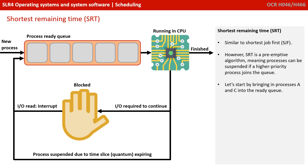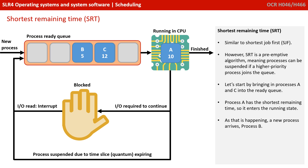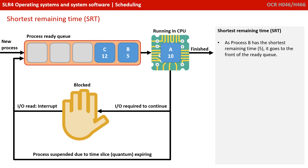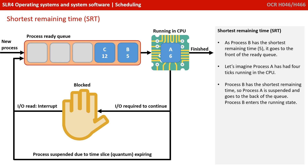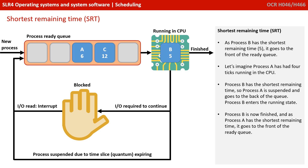The next algorithm to consider is shortest remaining time. This is very similar to shortest job first; however, this is what's known as a pre-emptive algorithm, meaning the process can be suspended if a higher priority process joins the queue. Process A and C enter the ready queue. Process A has the shortest remaining time so it enters the running state. As that is happening, a new Process B arrives. As Process B has the shortest remaining time, it goes to the front of the ready queue. Imagine Process A has had 4 ticks running — Process B has the shortest remaining time, so Process A is suspended and goes to the back of the queue, and Process B enters the running state. Process B finishes, and as Process A now has the shortest remaining time, it goes to the front of the queue.